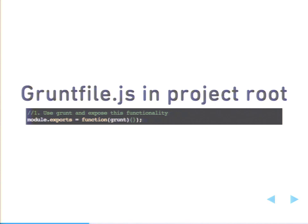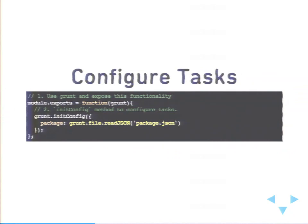Grunt is going to be looking for the Gruntfile. It can be either in JavaScript or CoffeeScript — for this demo, I just use JavaScript. The most simple Gruntfile is just this: it tells you what the module is exporting and that it requires grunt. Something that's really helpful is to expose some of the project configuration through the package.json, and this init config is where most of our tasks will go. We're basically just assembling a lot of plain JavaScript objects.